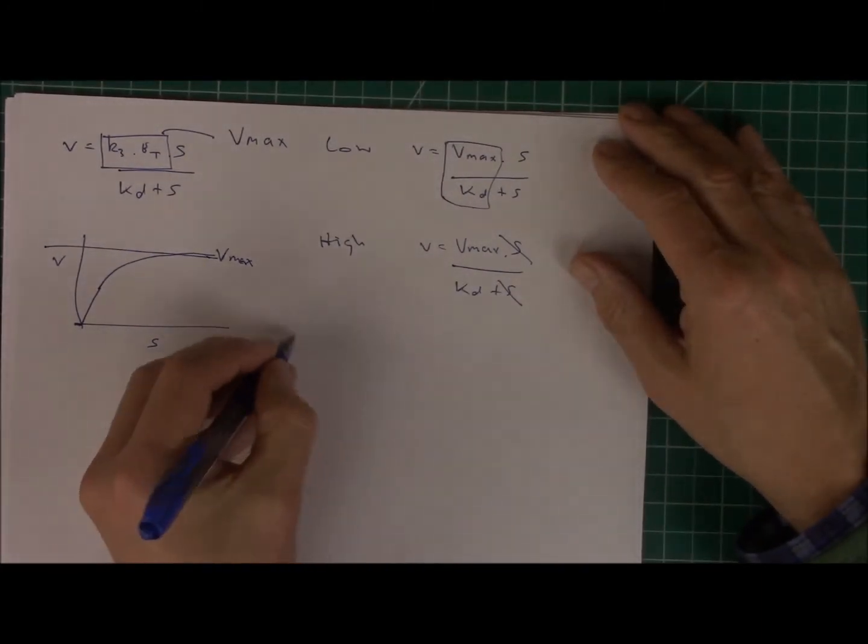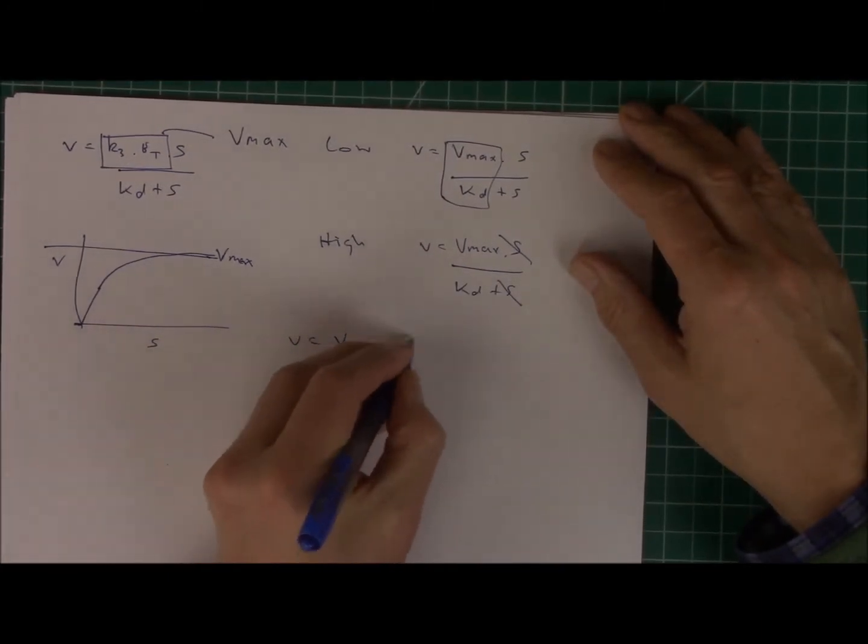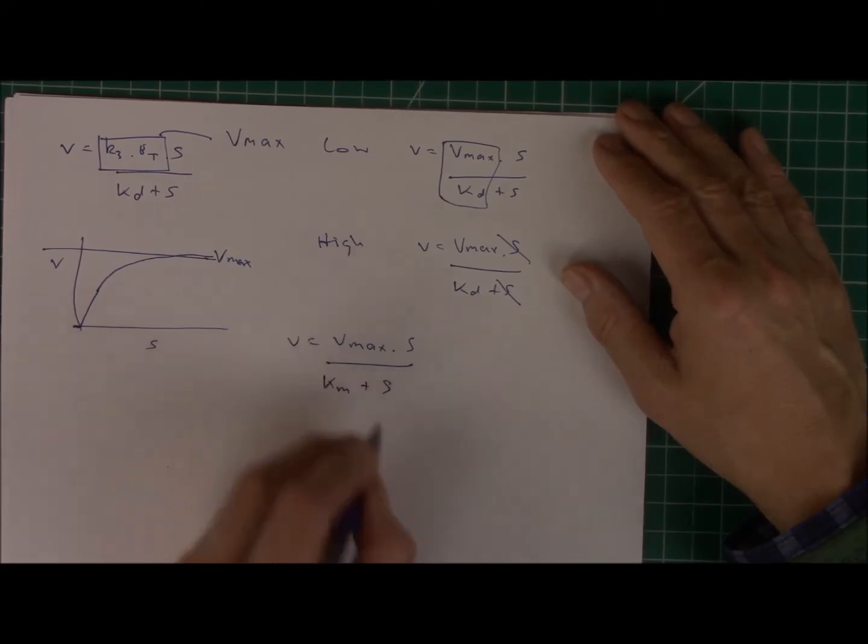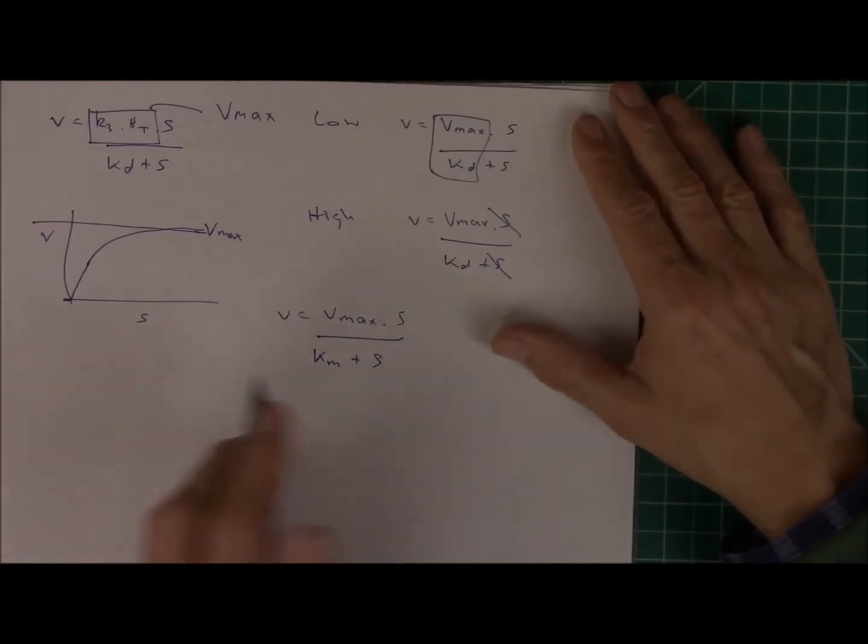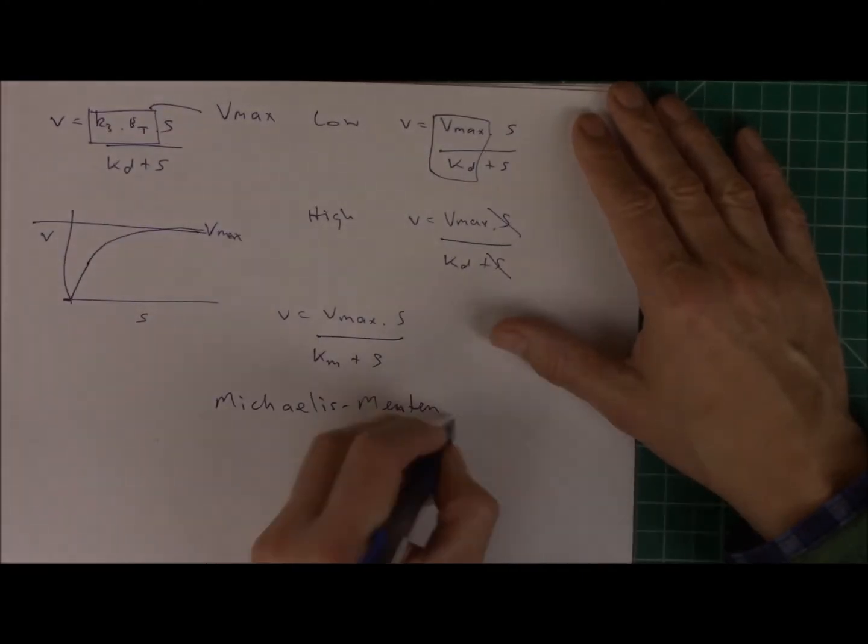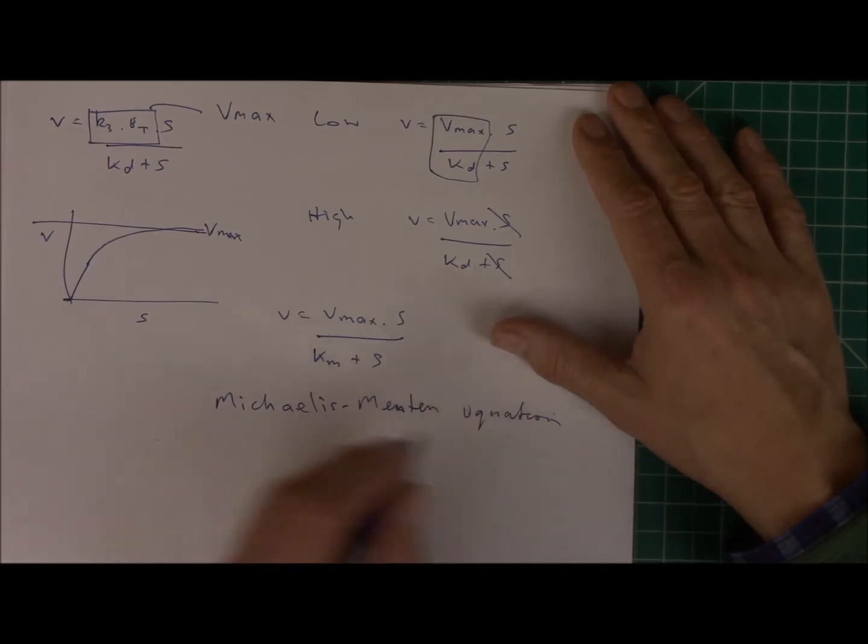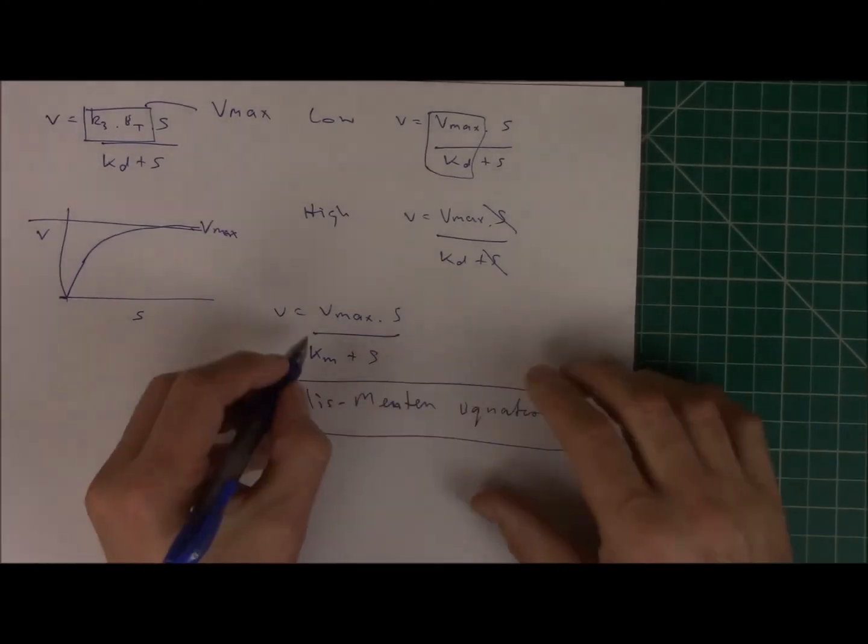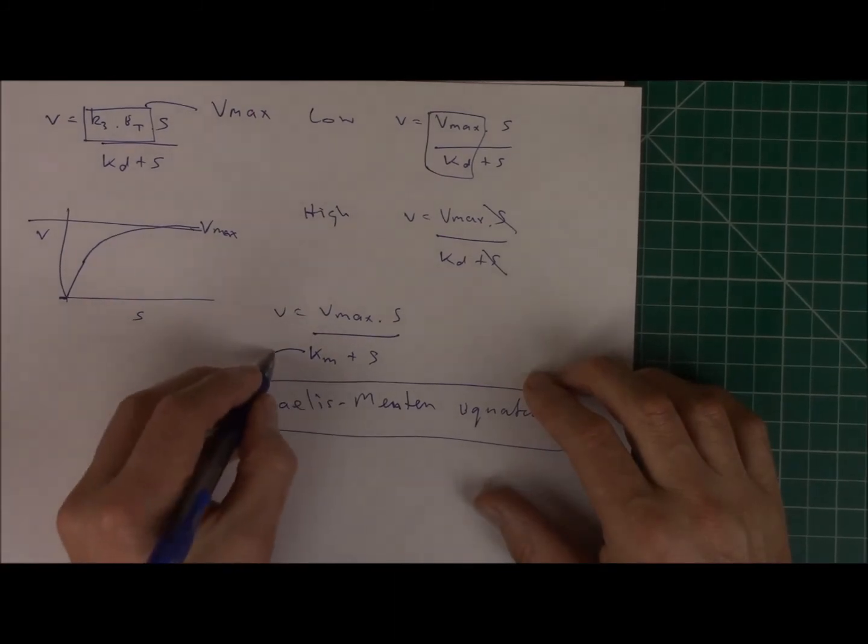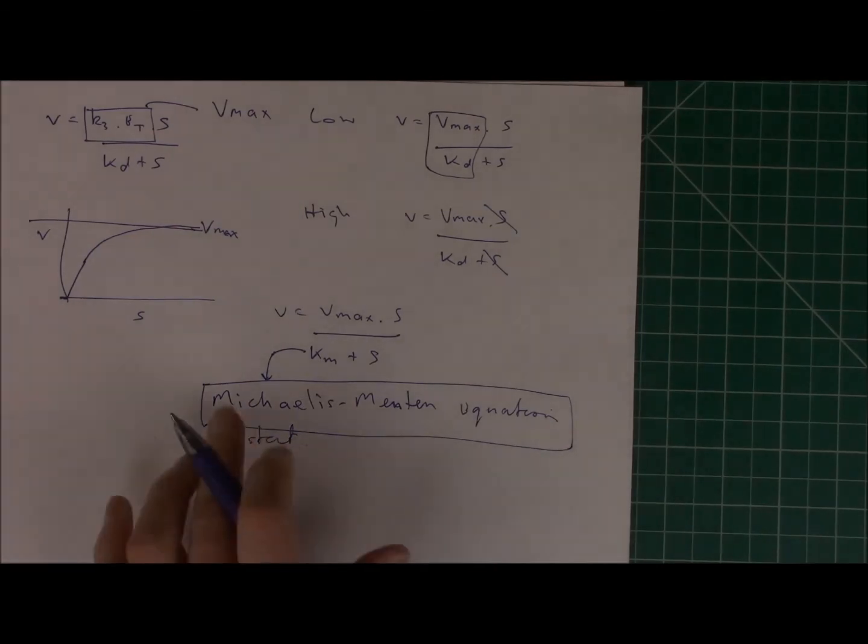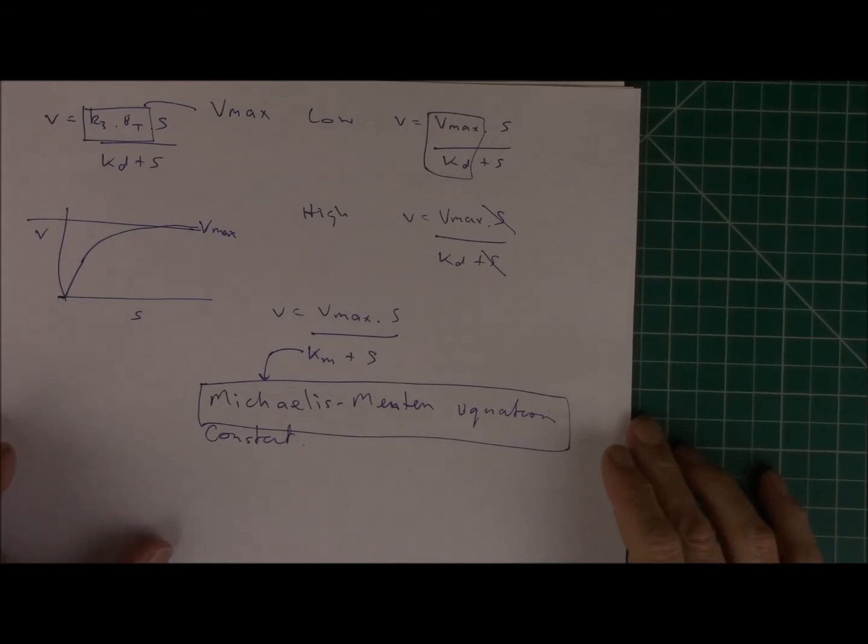Now this equation here, V equals Vmax times S. You'll sometimes find, well in many cases actually, that people change the KD and call it KM. And they call it KM because this equation is actually called, after the people who first derived it, the Michaelis-Menten equation. This is the Michaelis-Menten equation. And as I said, often you'll find people using the KM there instead. And this is often called the Michaelis constant, the Michaelis constant. And of course then it's called the Michaelis-Menten equation. That finishes this video. Thank you.